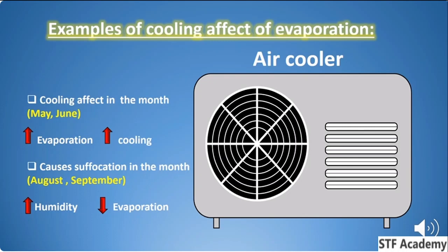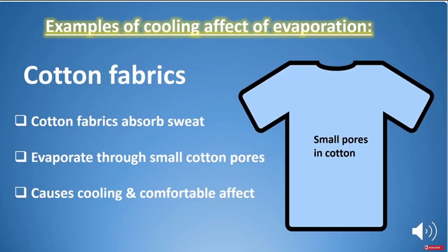However, if humidity is high, the air cooler is less effective. In May and June it works well, but in August and September the humidity increases in the air, so vaporization from the air cooler is reduced and the cooling is less effective.